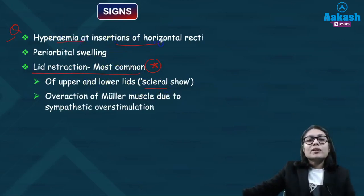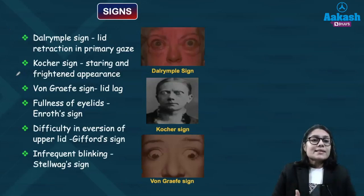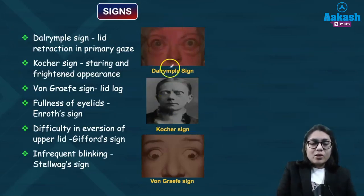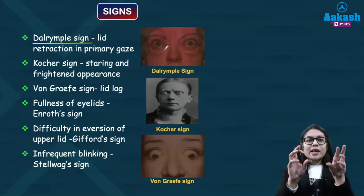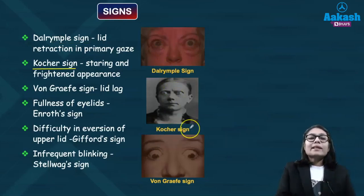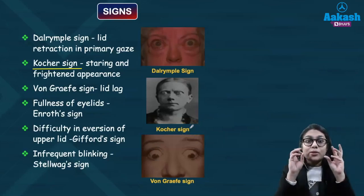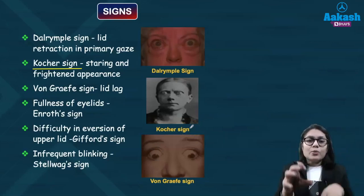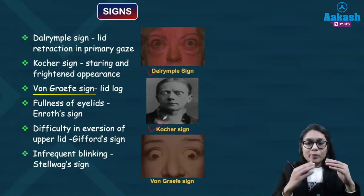Hyperemia is seen at the insertion of the horizontal recti — both extremely important points. The Dalrymple sign refers to lid retraction in the primary gaze, where you see lid retraction in both eyes in the primary position. The Kocher sign shows a staring and frightened appearance in the eyes — the eyes look as if they are staring out.